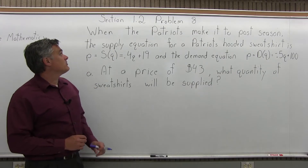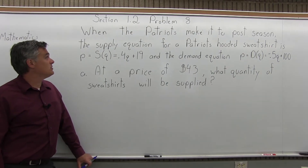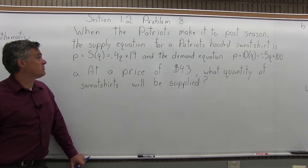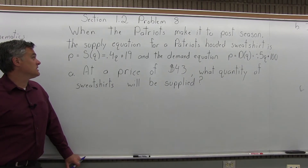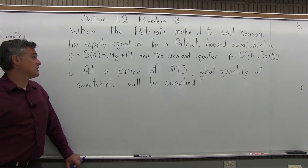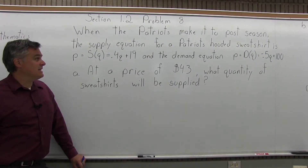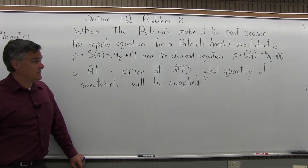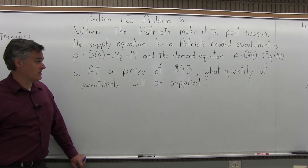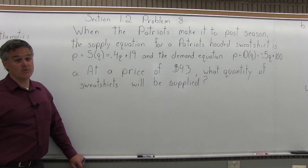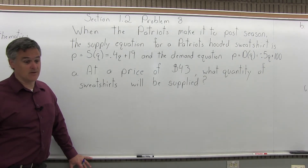This is problem number 8 from Section 1.2 of the homework. It says, when the Patriots make it to the postseason, the supply equation for Patriots Hooded Sweatshirt is P equals S(Q) equals .4Q plus 19. And the demand equation is P equals D(Q) equals negative .5Q plus 100. Based on that information, there are five separate parts A through E that we can answer.